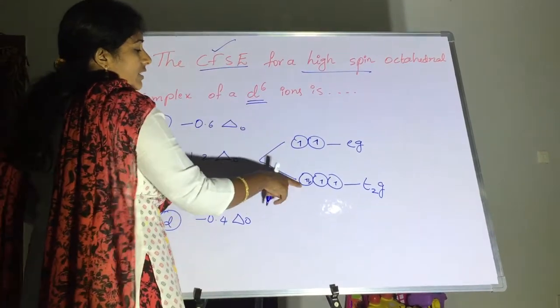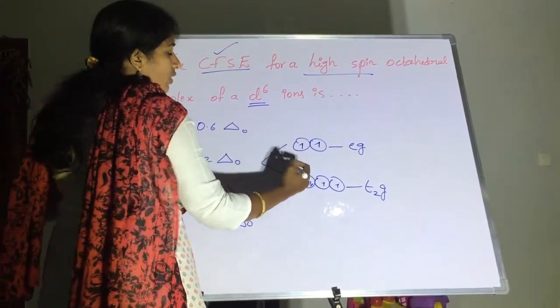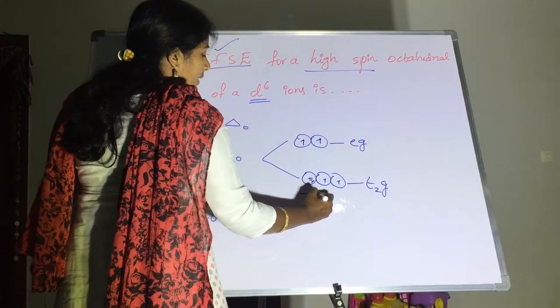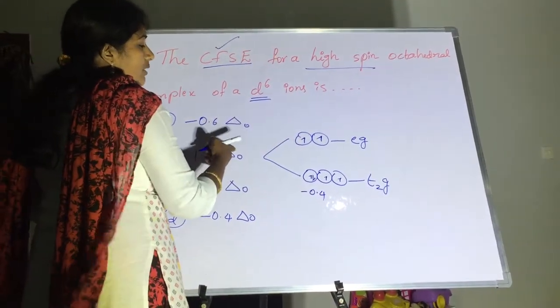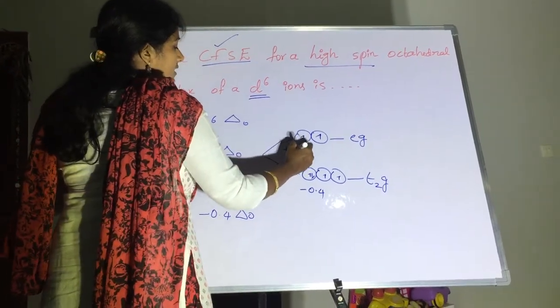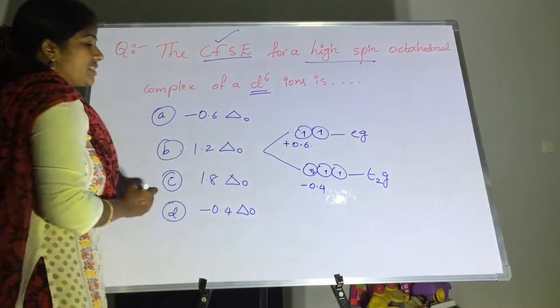when electron enters into t2g orbital, the energy is given by minus 0.4. When electron enters into this eg orbital, energy is given by 0.6.